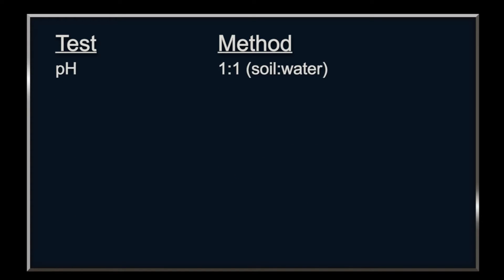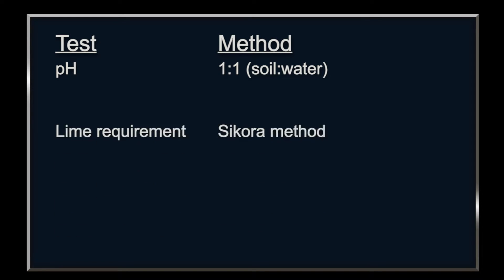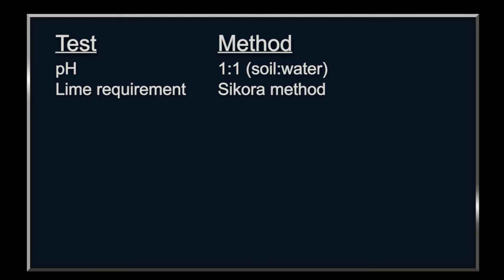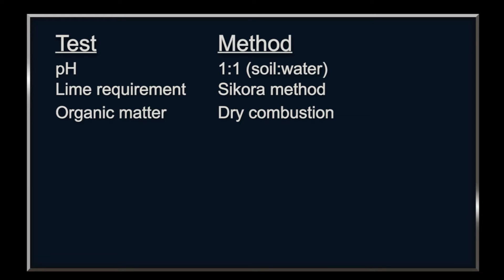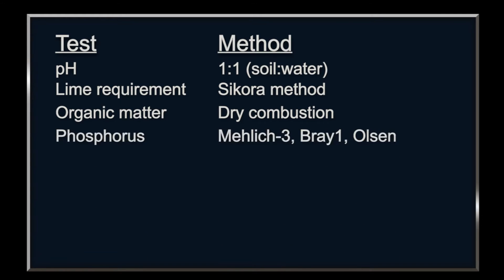The common extractants or methods used at Iowa State for soil fertility analyses include: the test for pH uses a one-to-one soil-to-water ratio; the test for lime requirement uses the Sikora method; the test for organic matter content uses dry combustion; the test for phosphorus may use the Melek-3, the Bray-1, or the Olsen method.